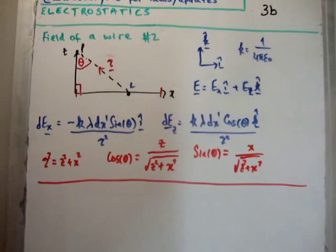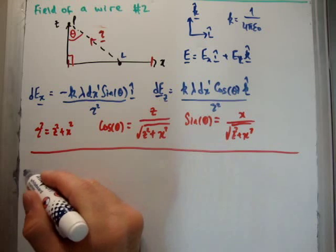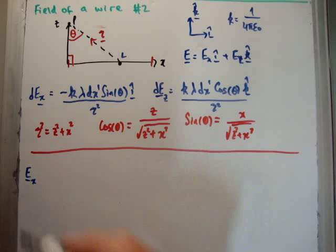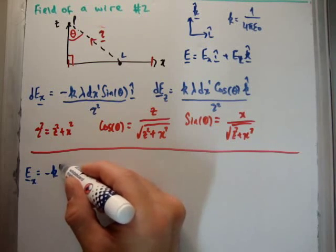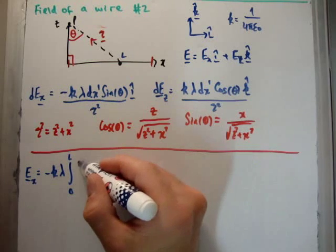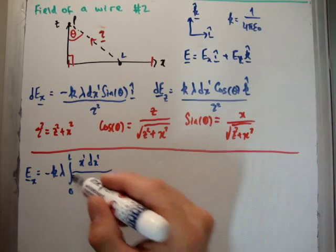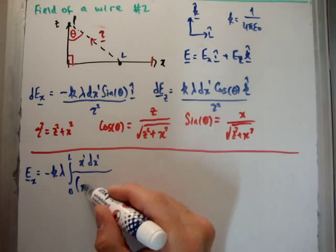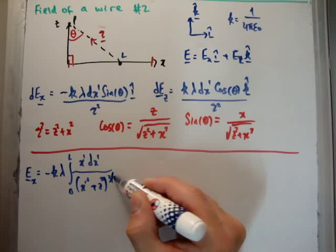So what we can do is plug all those in and compute our integrals. Now as I said in the last video the integrals actually aren't that easy to do, so I'm just going to write down the answer. E sub x is going to be equal to minus k times lambda outside the integral from 0 to L of x' dx' divided by (x'² + z²) to the power of 3/2.